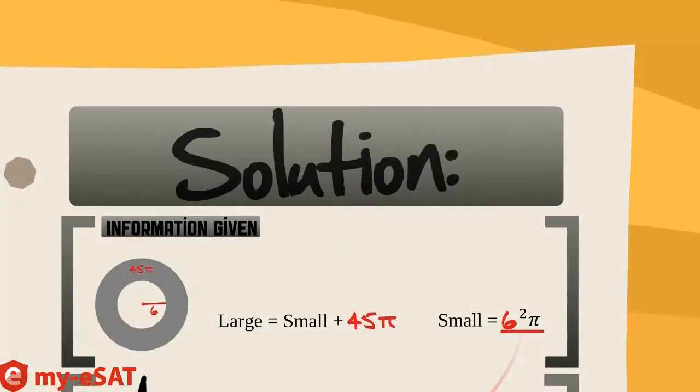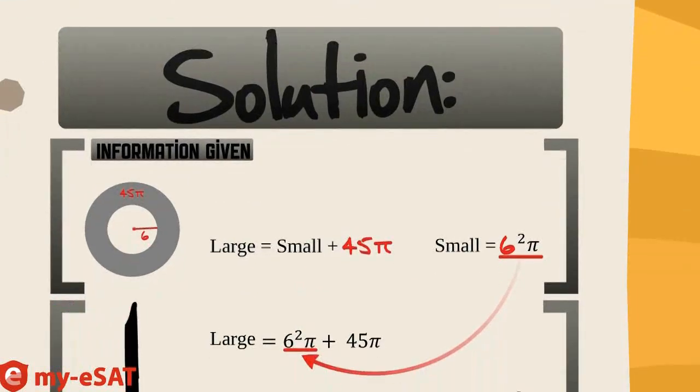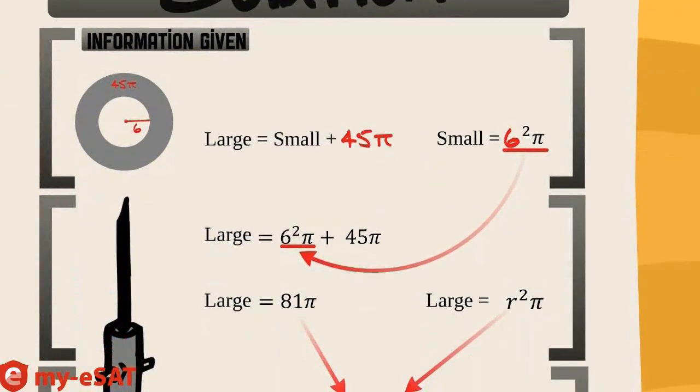To find the radius of the larger circle, we are going to have to take the information given to us and work backwards. We know that the area of the shaded area is 45π. So let's write down what we know about the larger circle. It's the small circle plus the shaded area, which is 45π. And the radius of the smaller circle is 6. Now, let's use the area formula to find the area of the small circle. We've already established the radius of the small circle is 6, so let's plug it into our formula. Then, plug 6 squared π back into our original equation to get the large circle equals 6 squared π plus 45π. Solve that out to get the large circle equals 81π.